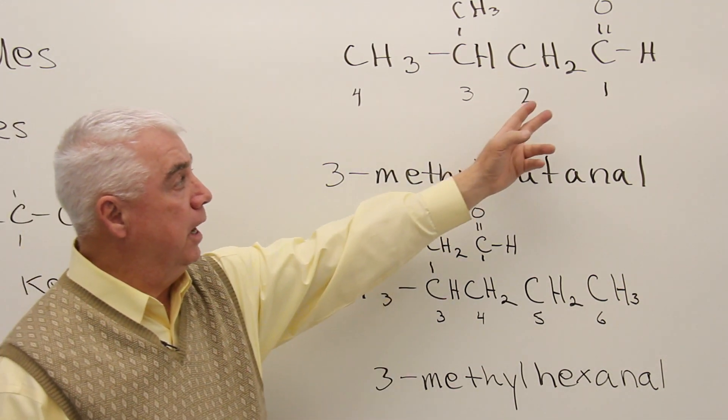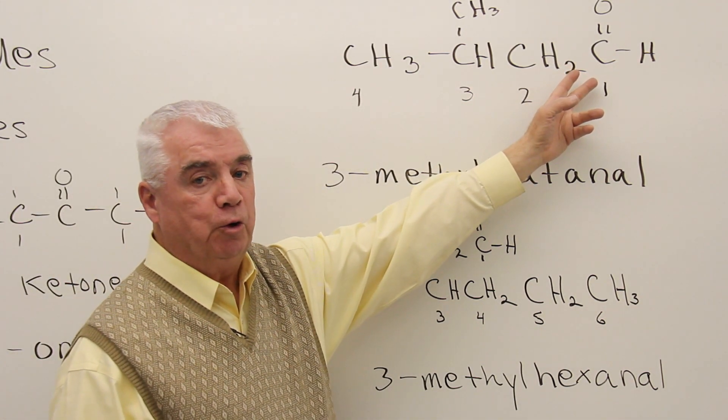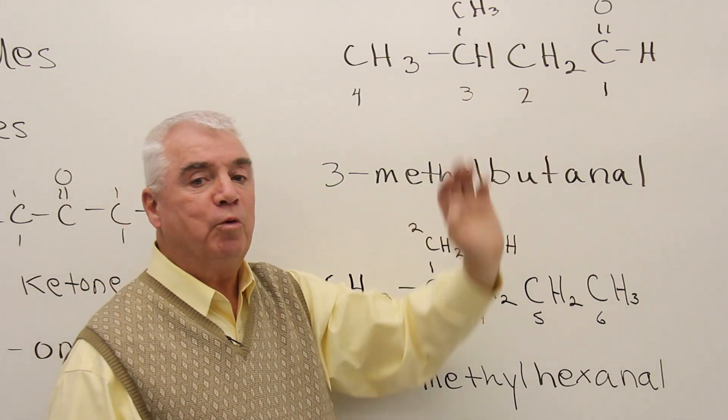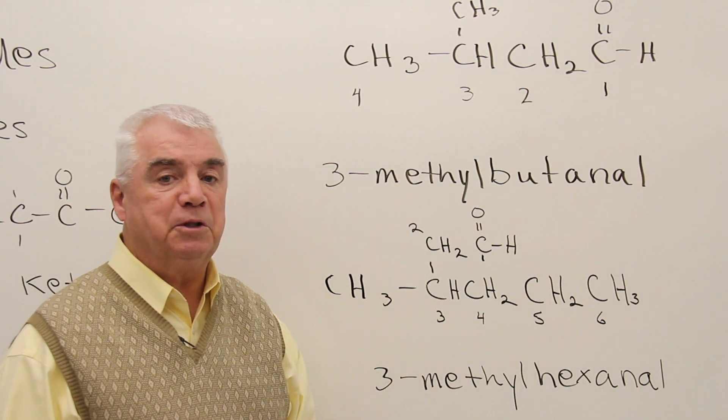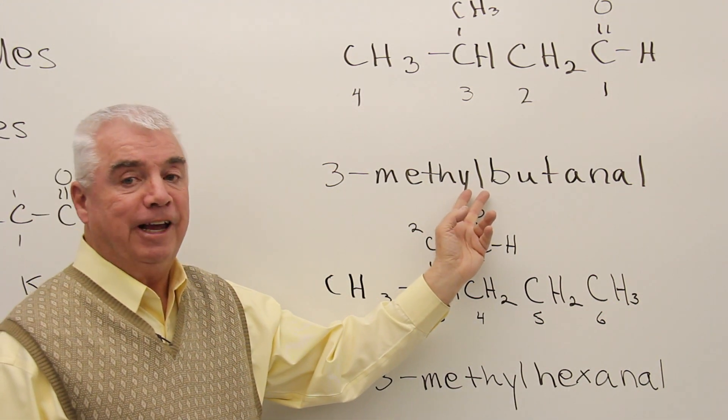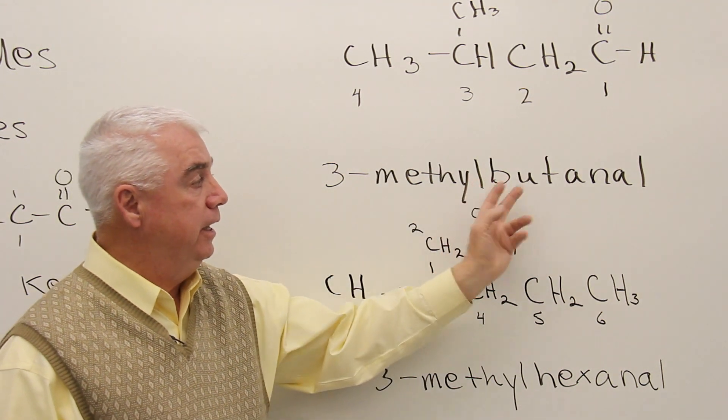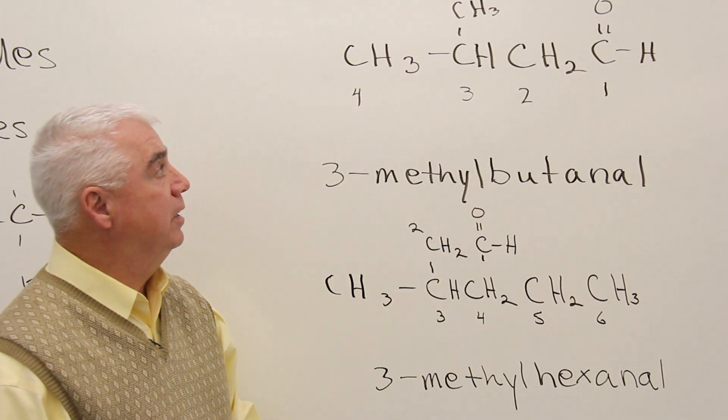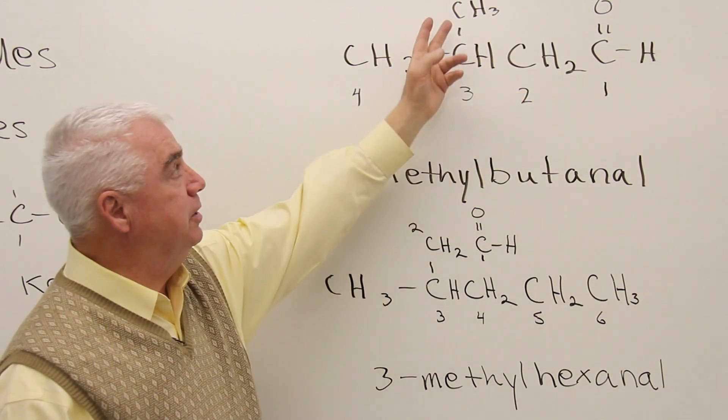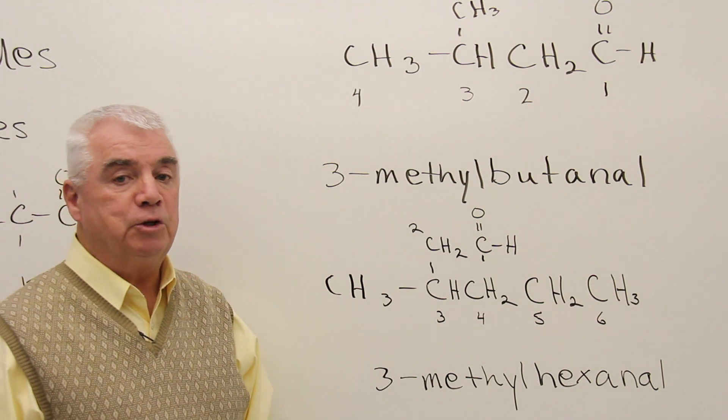Then we'll number the chain to give the lowest number to the position of the functional group that we can. And an aldehyde is always at the end of the chain. It's always going to be at position one. So we abbreviate it by just leaving out the one. Rather than calling it one-butanal, it's simply butanal. Then at position three, the only thing that we haven't named is this methyl group that's sticking up up there. So it would be 3-methylbutanal.